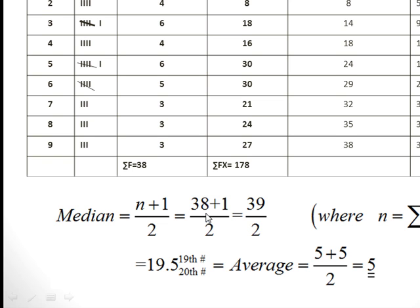So 38 + 1 divided by 2 gives 39 divided by 2, which is 19.5. Since the answer is a decimal, we take the whole number 19 and then 19 + 1 = the 20th number. Whenever you have a decimal answer you always have two numbers; if it's a whole number it's just one. So find the average of the 19th and 20th values.